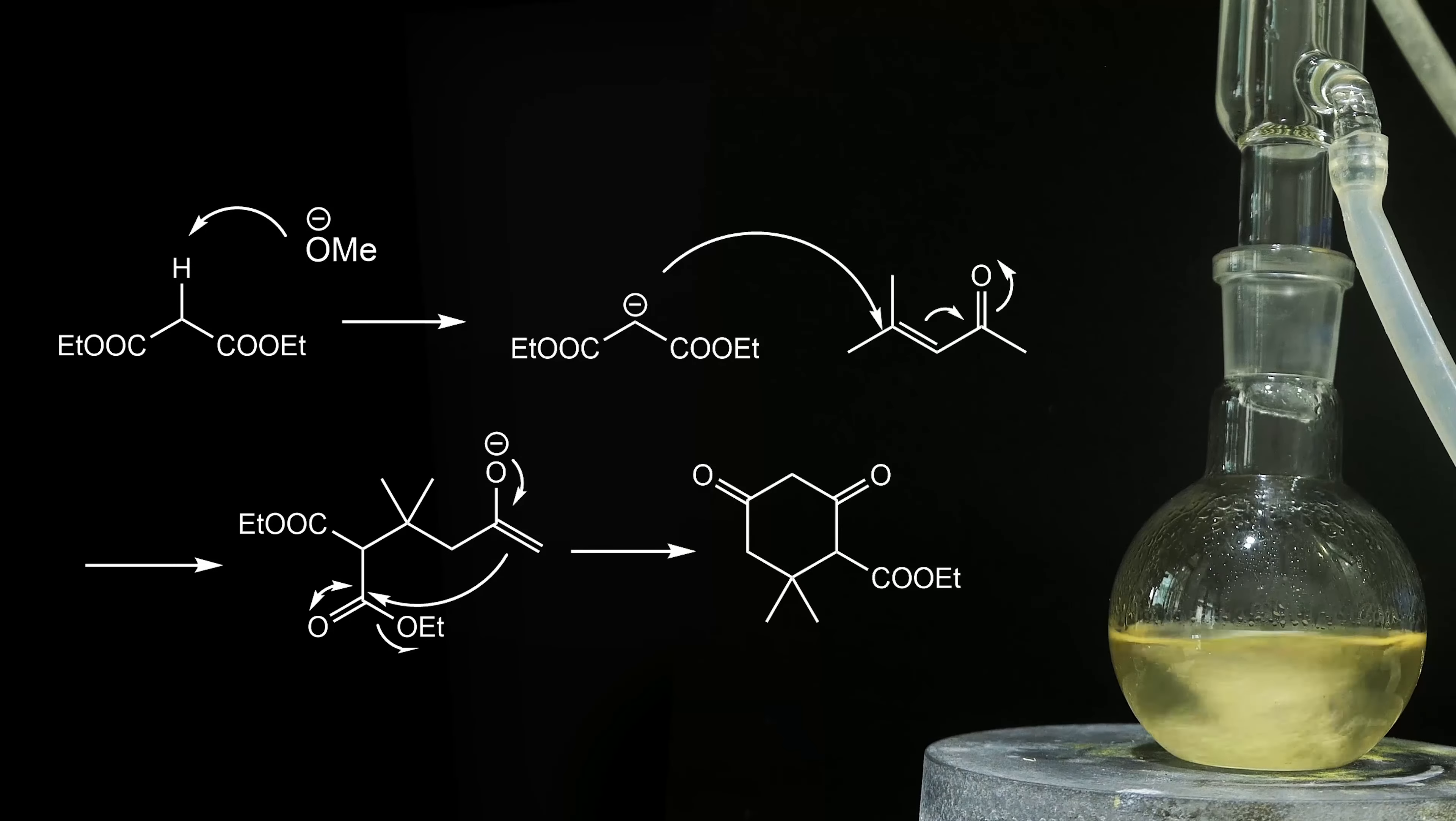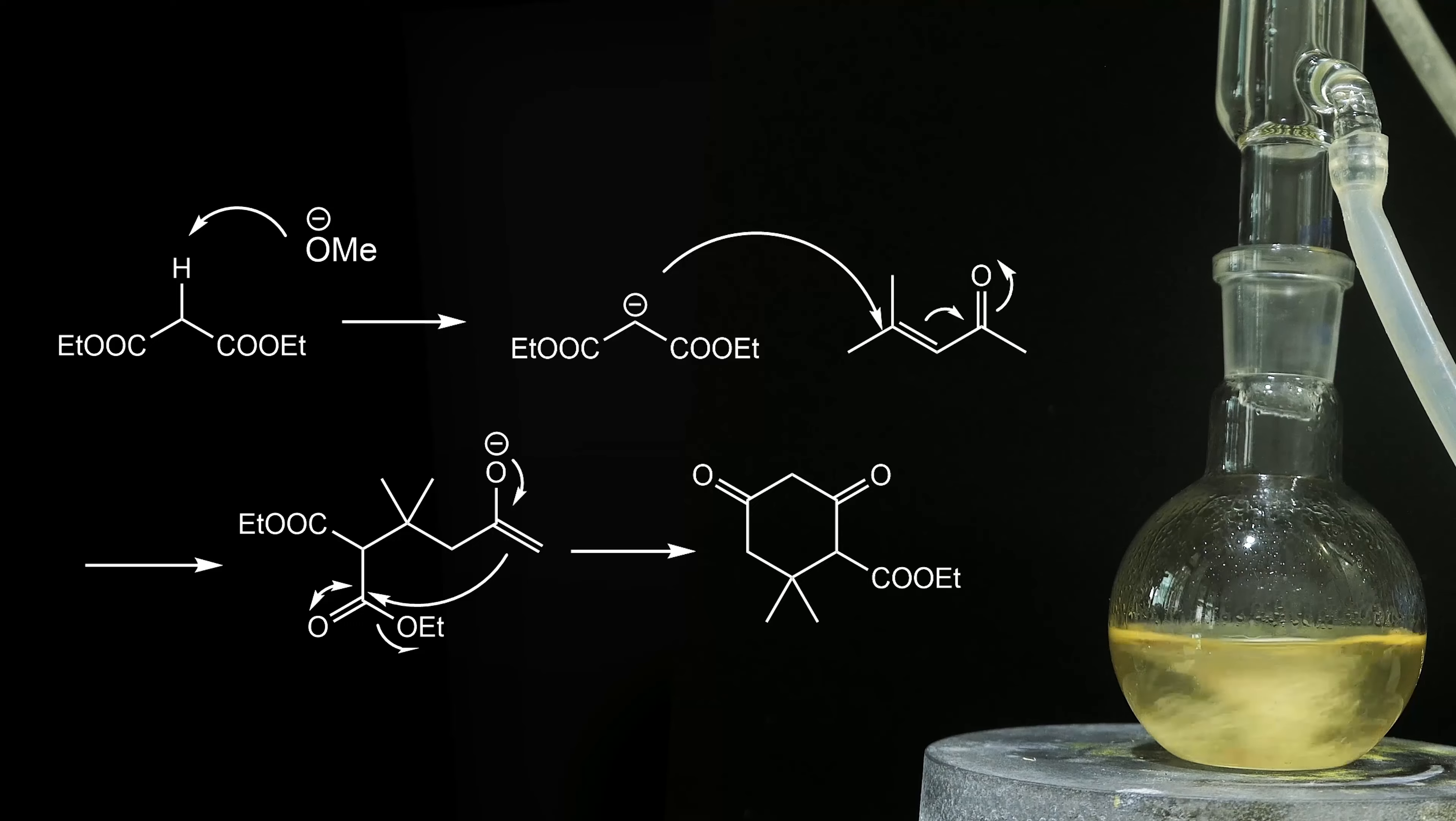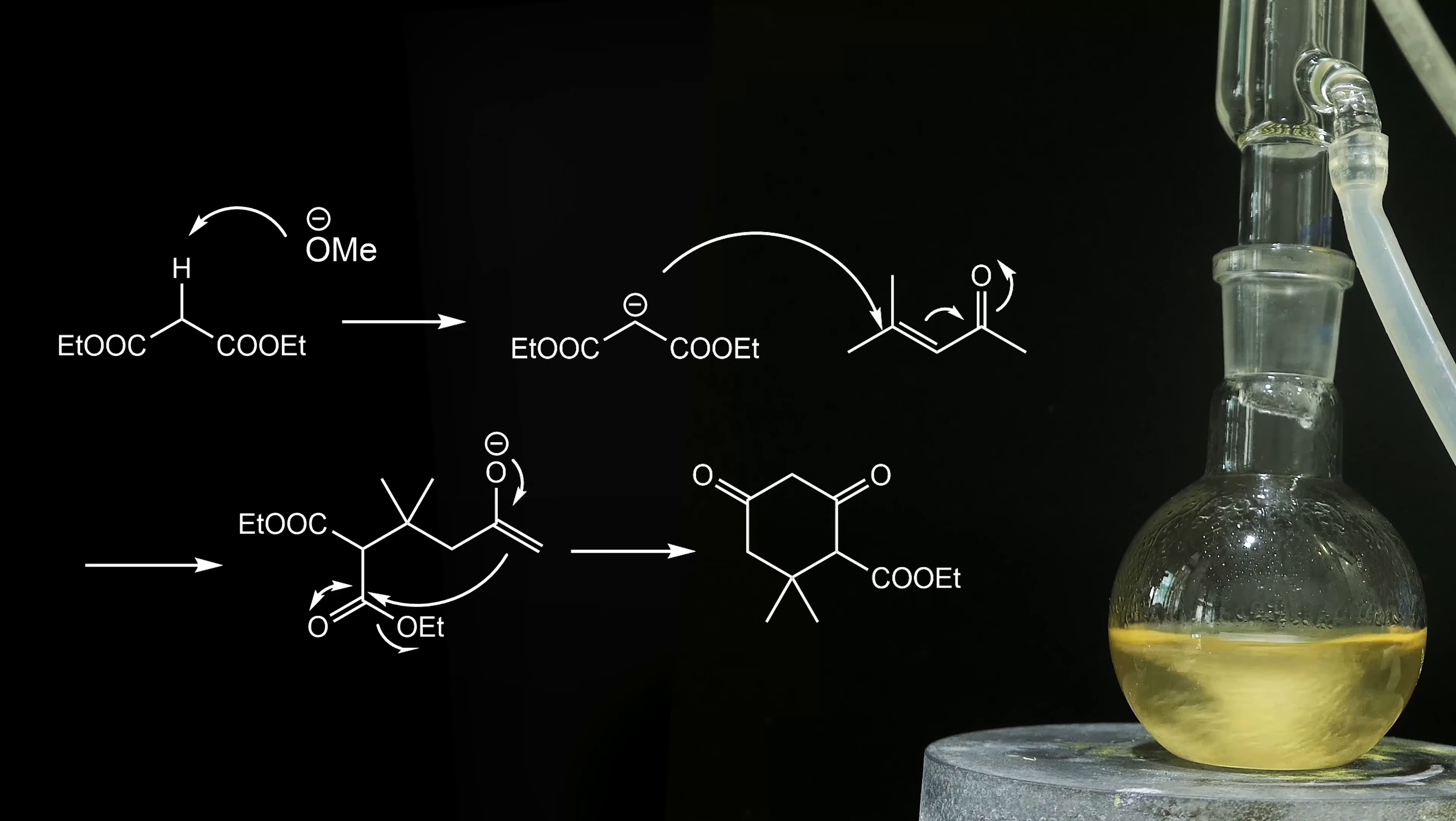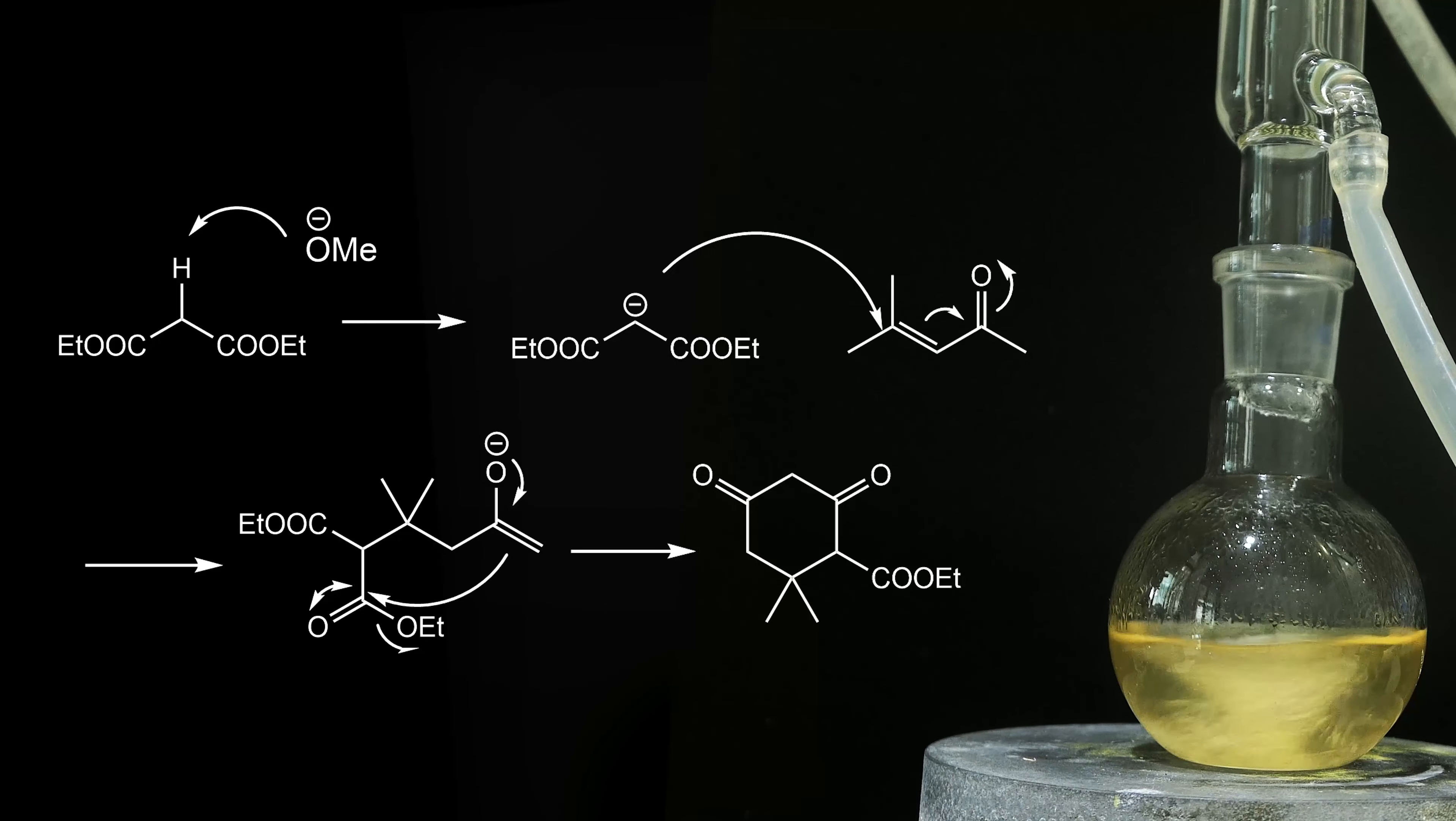During this period, a lot of reaction is taking place. First, diethyl malonate is deprotonated to form an anion. This anion performs Michael addition to mesityl oxide by conjugated addition, followed by intermolecular aldol condensation to generate the ester product.